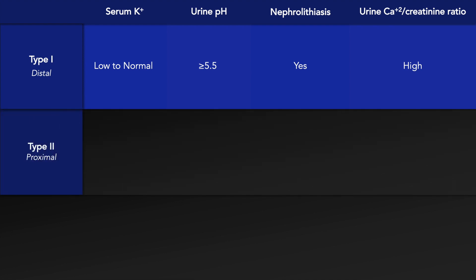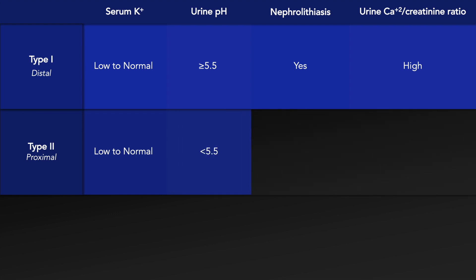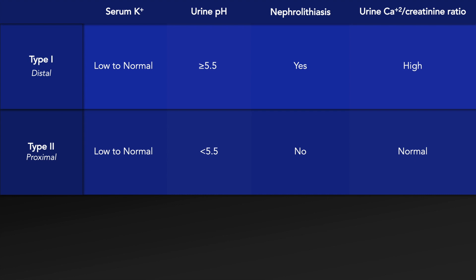The second type is proximal renal tubular acidosis. In type 2 RTA, the serum potassium level is also low to normal. The urine pH is typically less than 5.5, nephrolithiasis does not usually occur, and the urine calcium-creatinine ratio is usually normal.